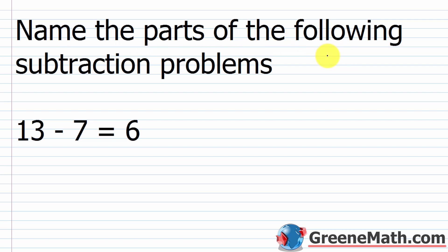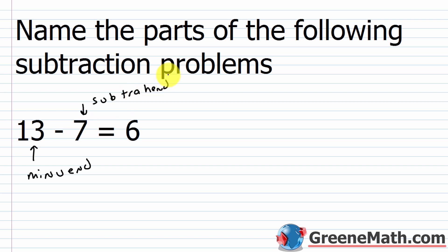Let's look at a few examples. We want to name the parts of the following subtraction problems. We have 13 minus 7 equals 6. So 13 is your minuend — that's the number from which another is subtracted, your starting amount or whole amount. We're subtracting away 7 from 13, so 7 is the subtrahend. And 6 is the result of the subtraction operation, so 6 is the difference — the amount left over when you're finished. I started with 13, that's my minuend; I took away 7, that's my subtrahend; and I have 6 left over, that's my difference.